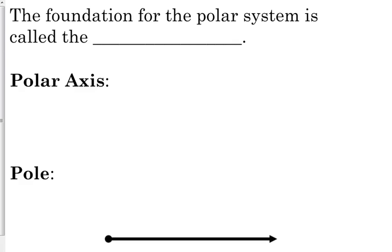So the foundation for the polar system is called the polar axis. The polar axis, and just like it is with all of our trig stuff, the polar axis is the positive x-axis. The positive x-axis is always where we're going to start, measuring our angles and everything from that point.